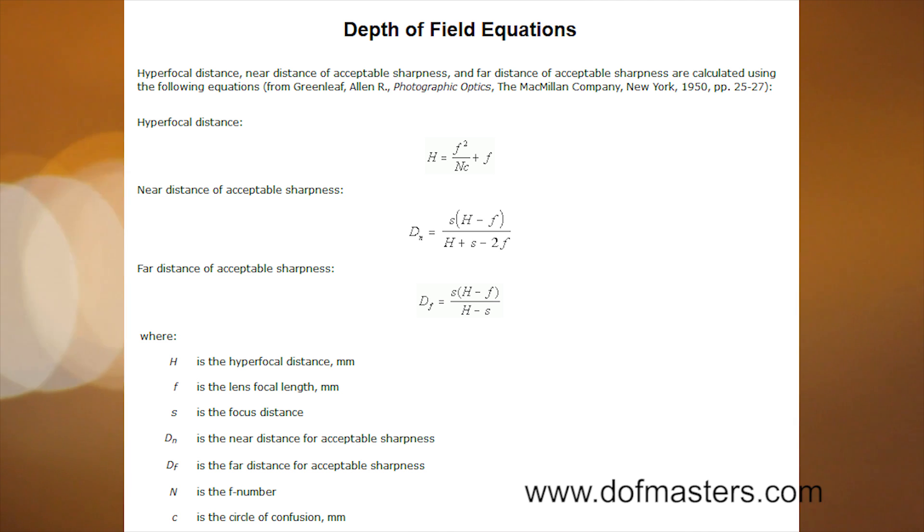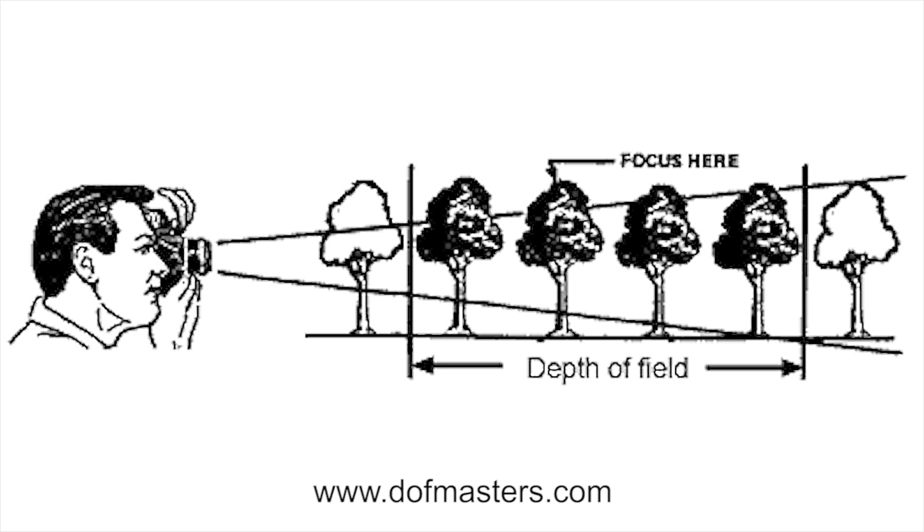Once we are able to calculate our near and far distances of acceptable sharpness, this will then allow us to calculate our depth of field by subtracting the two. We'll know exactly how far in millimeters a subject can stray either forward or backwards from the camera and still remain in acceptable focus.